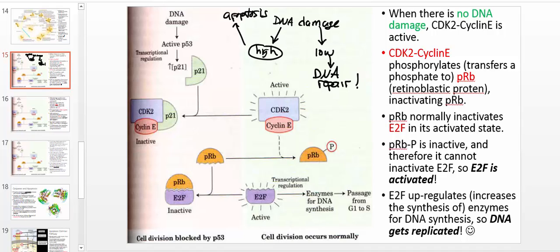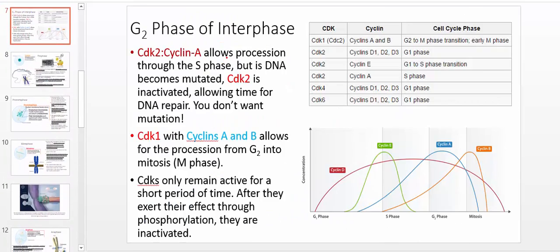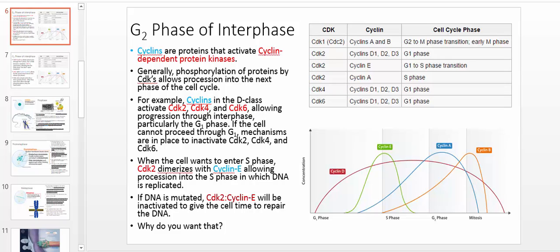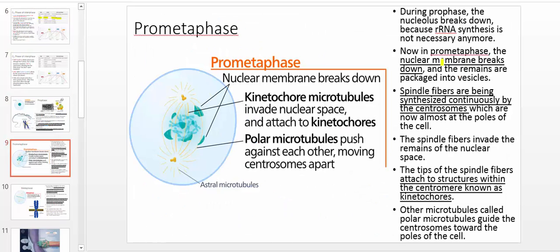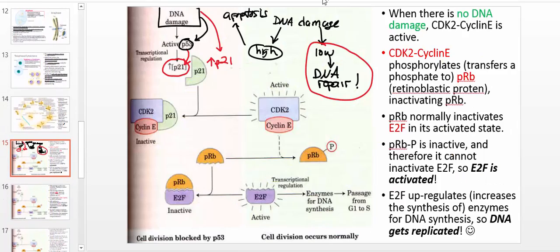What we're really concerned about in this video is the first case — low enough DNA damage that we can actually repair it. We're going to talk about the mechanism by which that occurs. Think back to previous videos where we talked about the regulation of entry into the S phase of the cell cycle. That was the complex of CDK2 and cyclin E, which regulated entry from G1 into the S phase. So active CDK2 and cyclin E facilitates that entry.